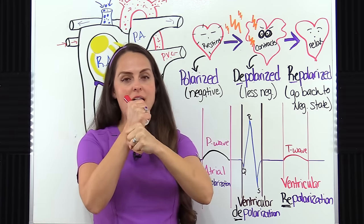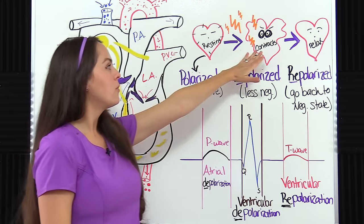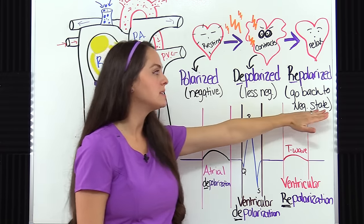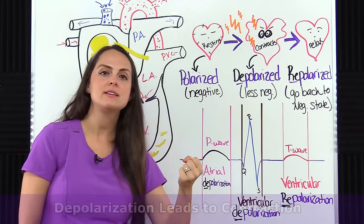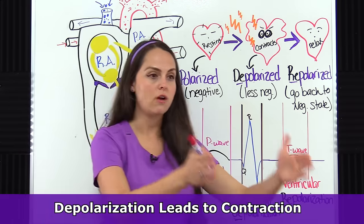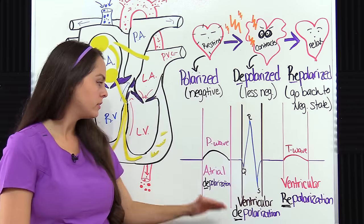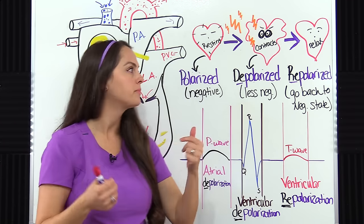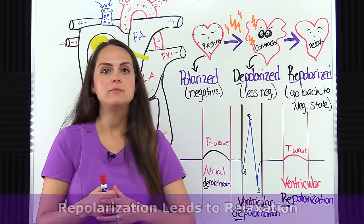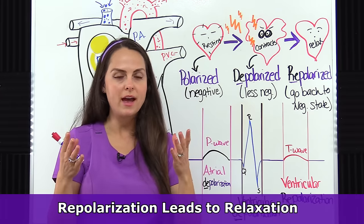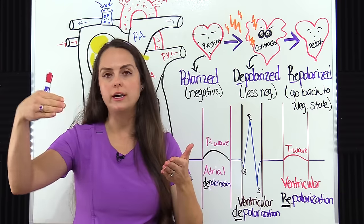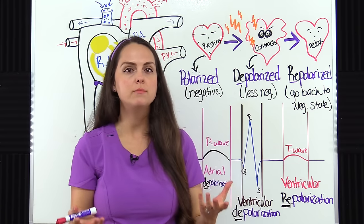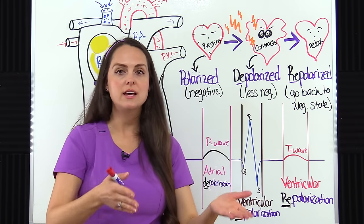The next step after contraction is relaxation. After contraction, it relaxes - we get repolarization, where the cell goes back to its negative state. What you want to take away from this is that depolarization leads to contraction. So whenever I say atrial depolarization, I'm talking about atrial contraction. Whenever I'm talking about repolarization, I'm talking about relaxation. To help you remember and keep those two straight: the word relax starts with RE, and repolarization starts with RE. So whenever I refer to ventricular repolarization, I'm talking about the relaxation of the ventricles.